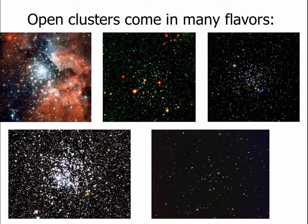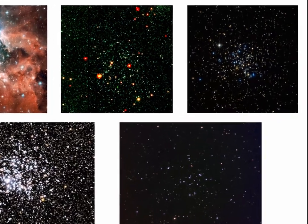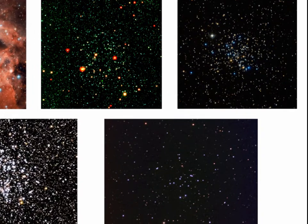Open clusters themselves have many flavors. If an open cluster is just forming, it might still have gas around it. Some open clusters do have a lot of stars, although not nearly as many as a globular. Other open clusters have varying amounts of stars — sometimes blue stars, sometimes red stars, sometimes barely any stars at all. But all of these are open clusters.